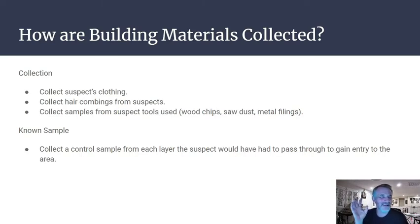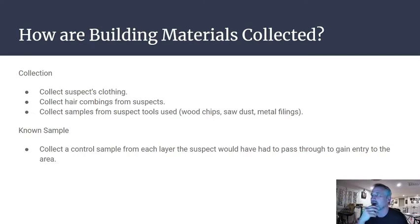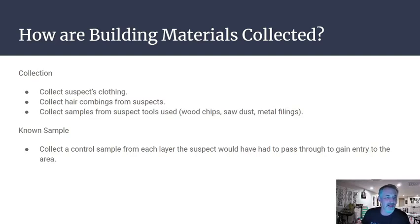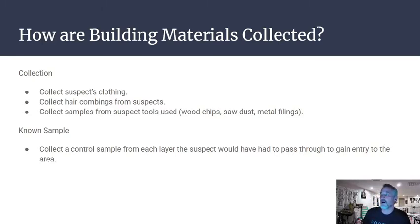For building materials — relevant to the home invasion scene with forced entry through a front door — you may find wood chips from a pried-open door. Collect the suspect's clothing and hair combings, which could contain wood chips, sawdust, or metal filings. For known samples, collect a control sample from each layer the suspect would have passed through to gain entry, such as sawed bars or pried wood.